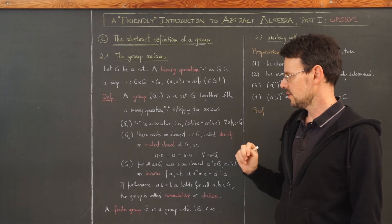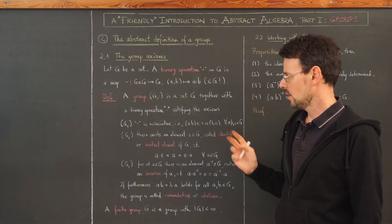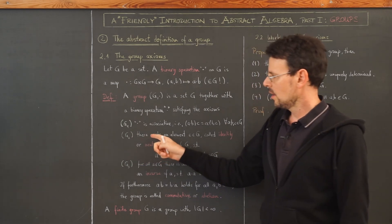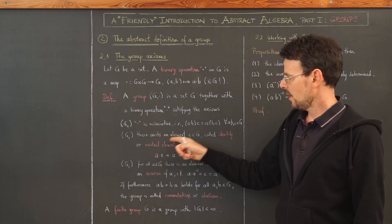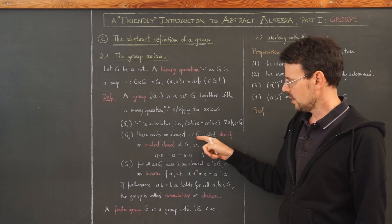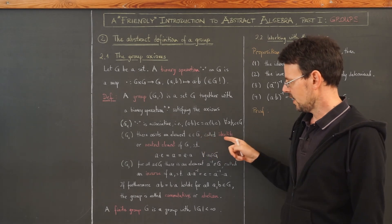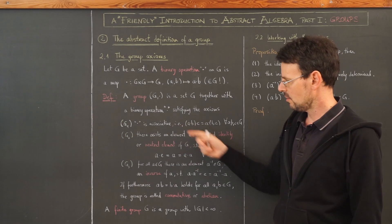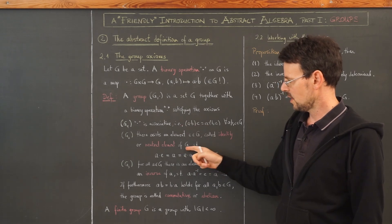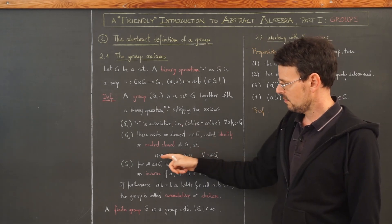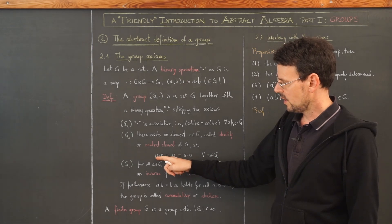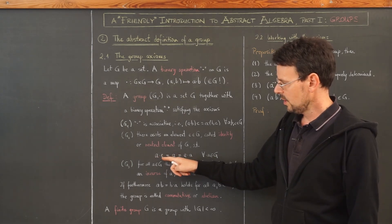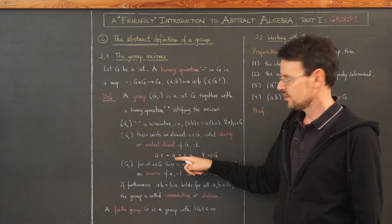The position of the parentheses is not important — that's associativity. Then there must be an element e of the set, called an identity or sometimes the neutral element of G, such that the following holds.